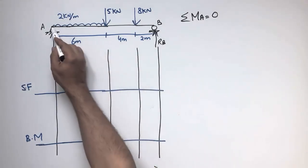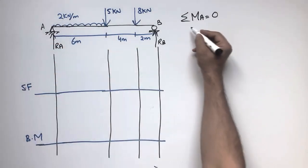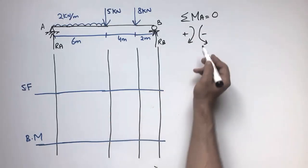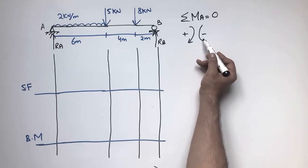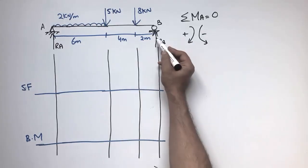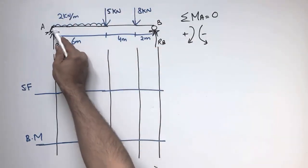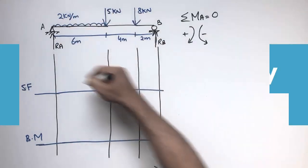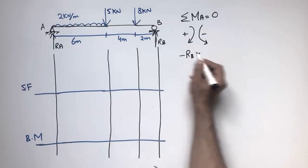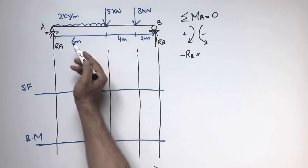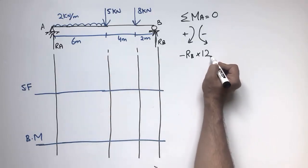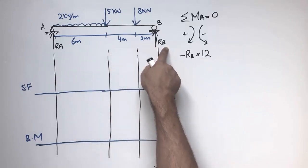The summation of moments at A equals zero. Our sign convention is that clockwise moments are positive and anti-clockwise moments are negative. Starting with Rb: it acts anti-clockwise around support A, so it is minus Rb. The moment arm is the full span: 6 + 4 + 2 = 12 meters.